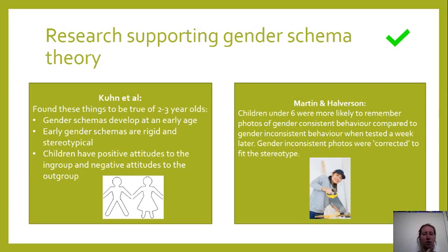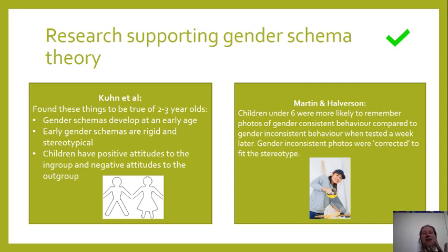The other study showed photos to children under six — some were gender-consistent, such as a man with a saw, and some were gender-inconsistent, such as a woman with a saw. When tested a week later, gender-consistent images had been remembered, but gender-inconsistent images were corrected to fit the stereotype. So if they'd been shown a woman with a saw, they'd report it was a man with a saw that they'd seen. This supports the idea in gender schema theory that children have rigid, stereotypical gender schemas and forget information that doesn't fit.